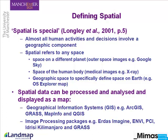Geographic space specifically defines space on Earth. For example, an OS Explorer map tells you the location of features in space when you go walking in the Peak District. Spatial data can be processed and analysed, and usually it's displayed on a map giving key information to address a specific question. There are lots of different software packages — GIS packages such as ArcGIS and image processing packages — which enable you to analyse your spatial data.